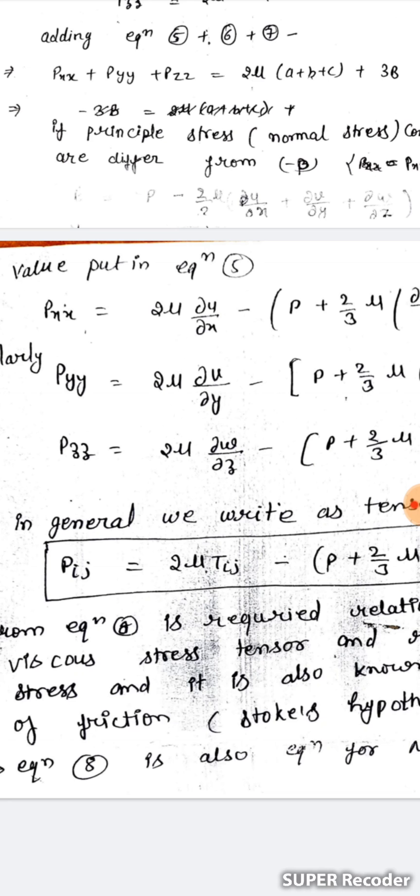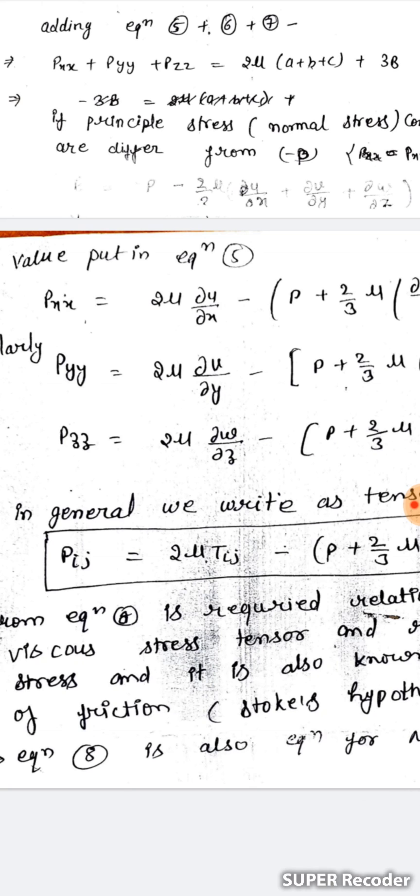From all these results, in general tensor notation we can write: Pij = 2*mu*Tij - P*delta_ij + (2/3)*mu*(divergence of q)*delta_ij, where Pij is the stress j-component in the i-direction, Tij is the strain rate component, mu is the viscosity, and divergence of q = du/dx + dv/dy + dw/dz. This is equation number eight.